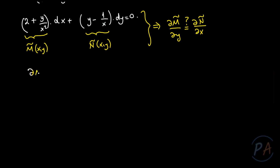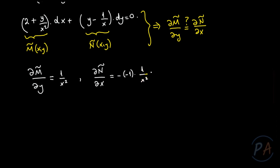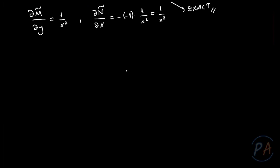Partial derivative of M̃ with respect to y equals 1/x², and partial derivative of Ñ with respect to x is also 1/x². So this equation is exact, and I can solve it by following the steps for solving exact differential equations.